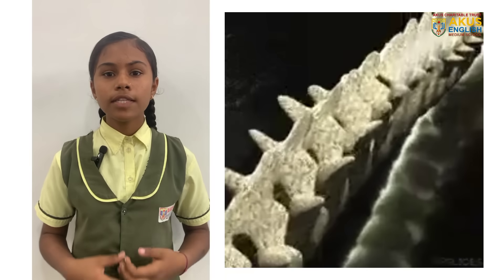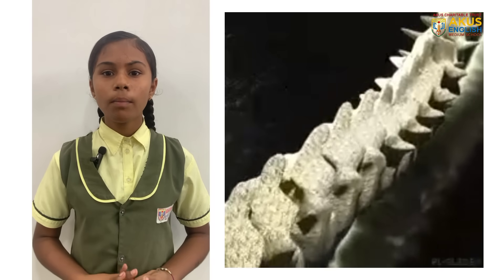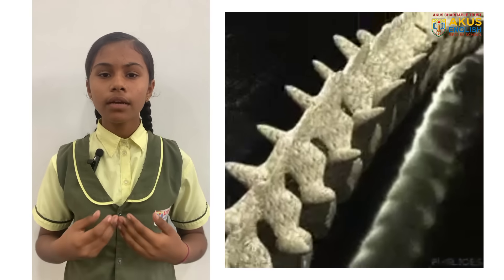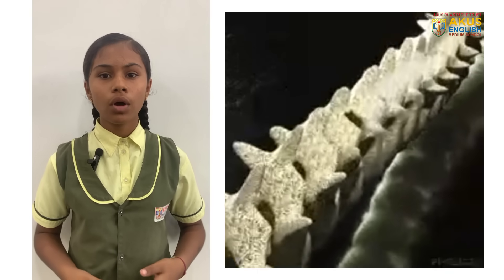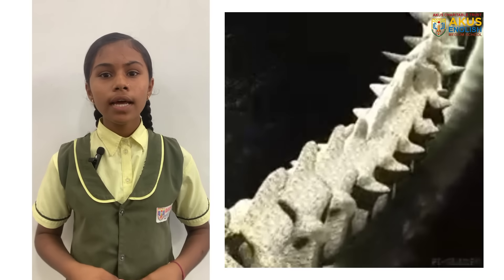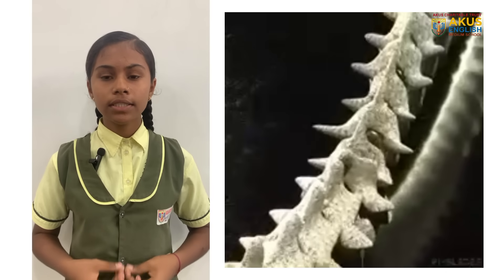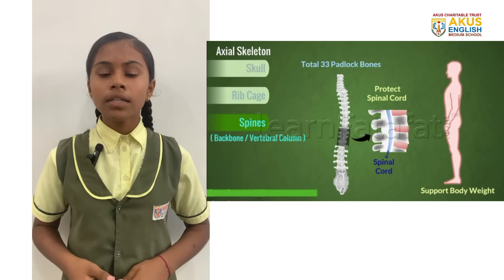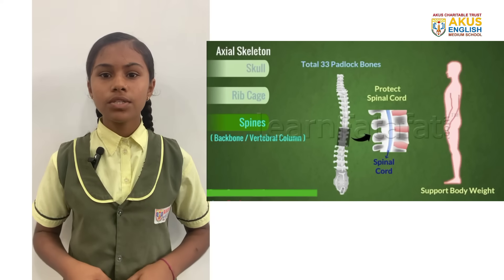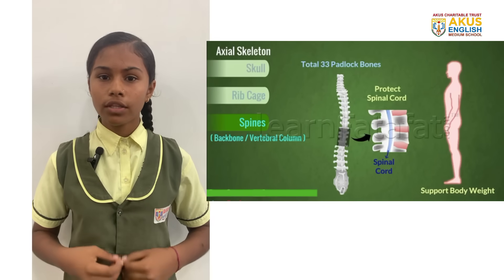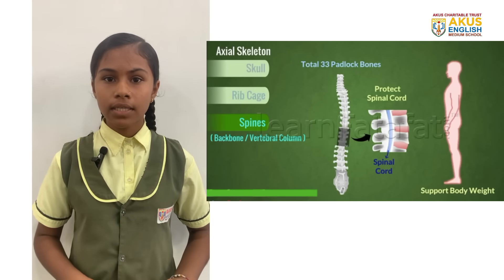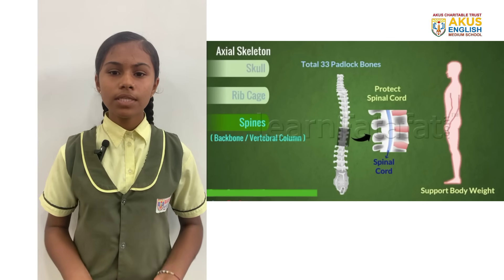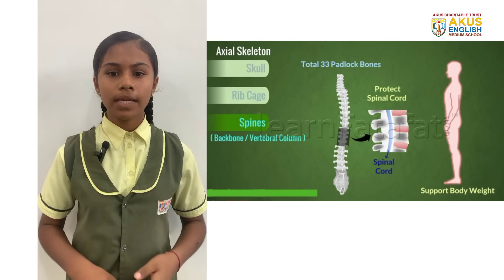The spine is formed by padlock-shaped bones placed straight one above the other. There are altogether 33 bones in the spine, each called a vertebra. These are arranged one above the other flexibly. The spine protects the spinal cord which originates from the brain.